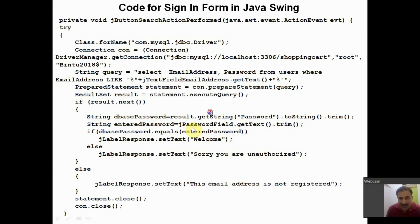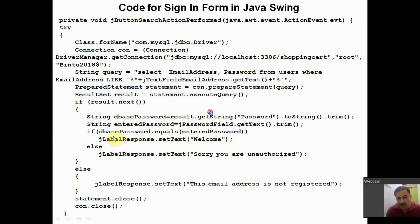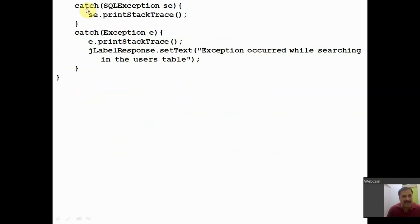If result.next() returns true — meaning at least one row was found — it enters the if block. You retrieve the password from the database via the result object and assign it to the variable 'dbasePassword'. You also get the password entered by the user in the password field and assign it to 'enteredPassword'. If both match, the label response displays 'Welcome'. If not, it displays 'Sorry, you are unauthorized'. The catch statements handle errors such as library not found, table not found, or row access errors, displaying 'Exception occurred while searching in the users table'.